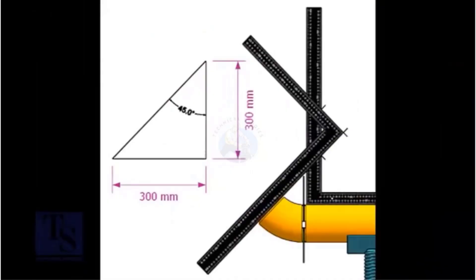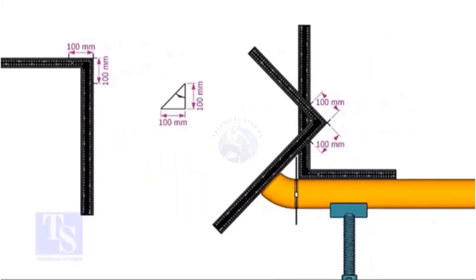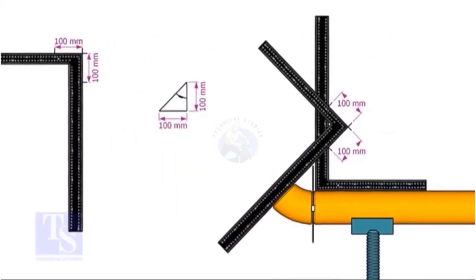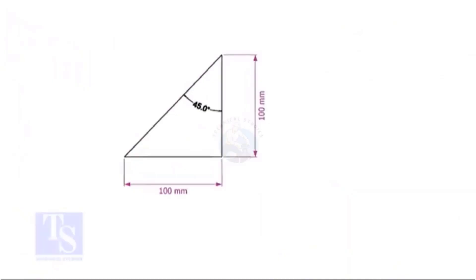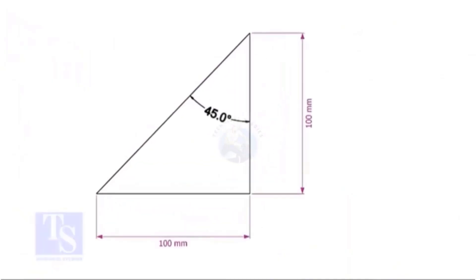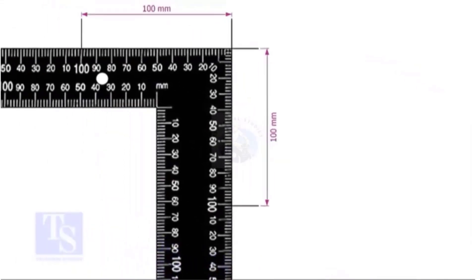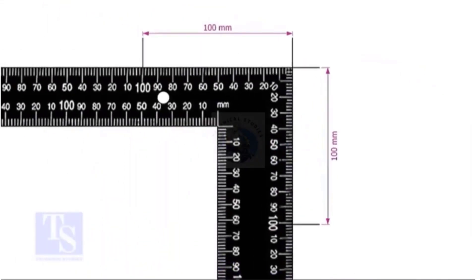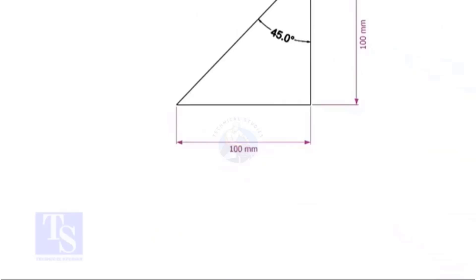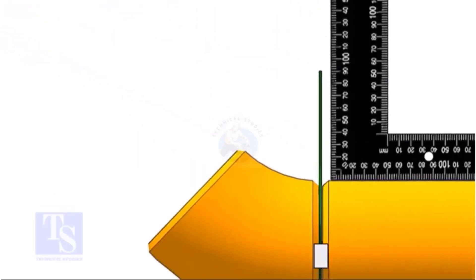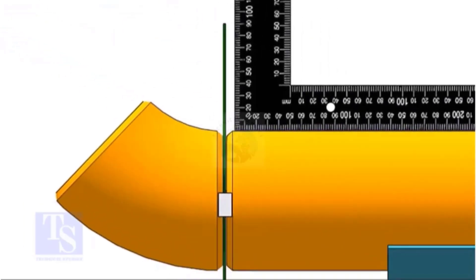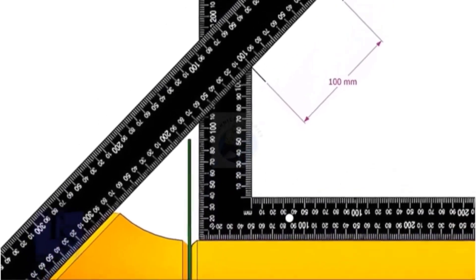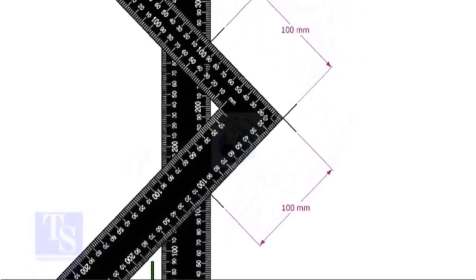For a 45 degrees elbow, the set and the run are equal. Mark any convenient distance on the right angle. Here I marked 100 millimetres and follow the same process as the 30 degrees fit up.